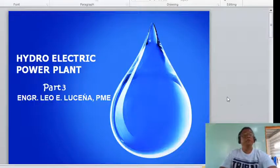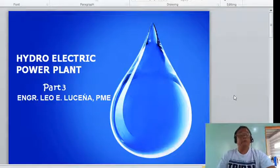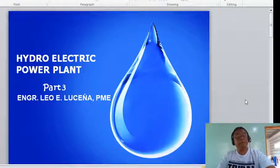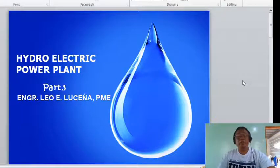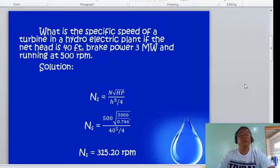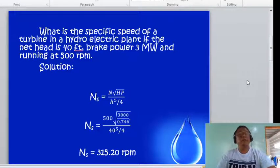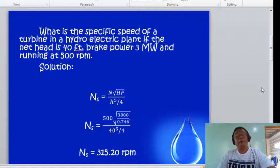Hi class, good afternoon. This is part 3 of the presentation on hydroelectric power plants. This presentation gives you additional examples. Let's proceed to the example. This example tackles the specific speed of a turbine. What is the specific speed of a turbine in a hydroelectric plant if the net head is 40 feet, brake power is 3 megawatts, and running at 500 rpm?